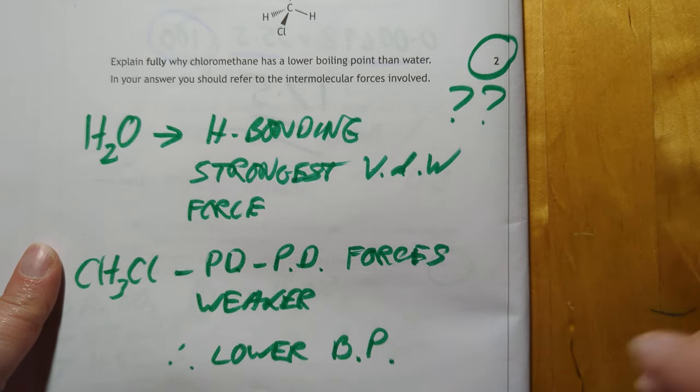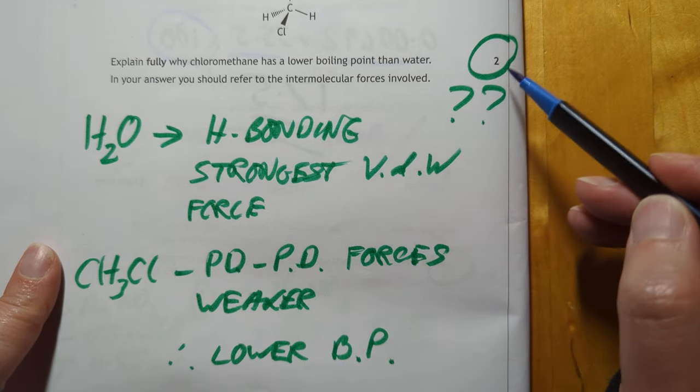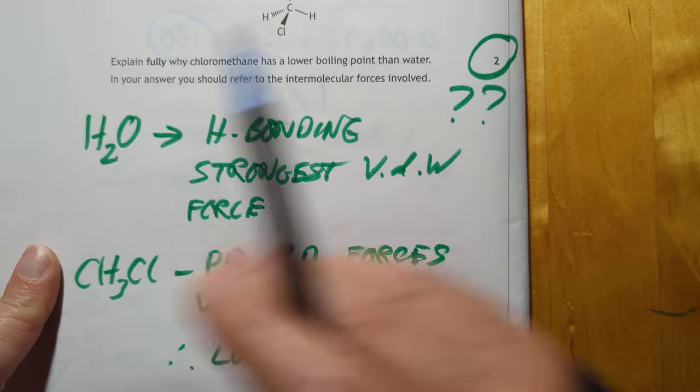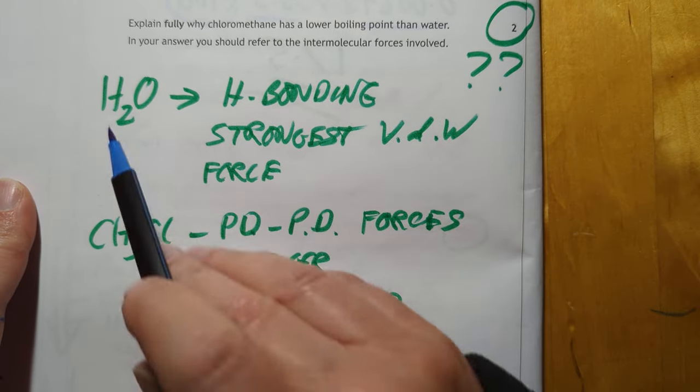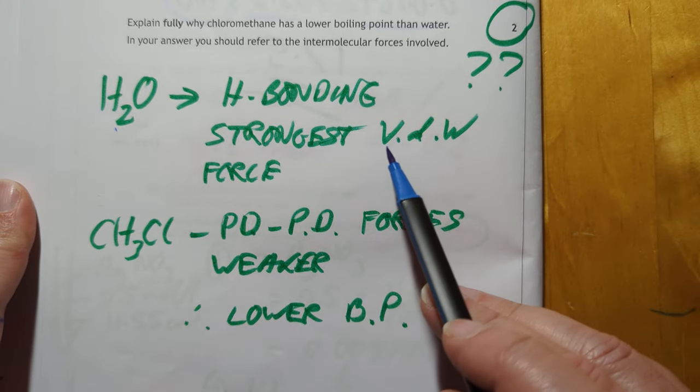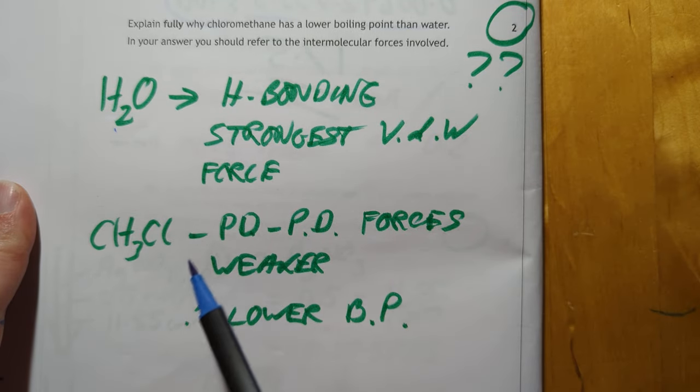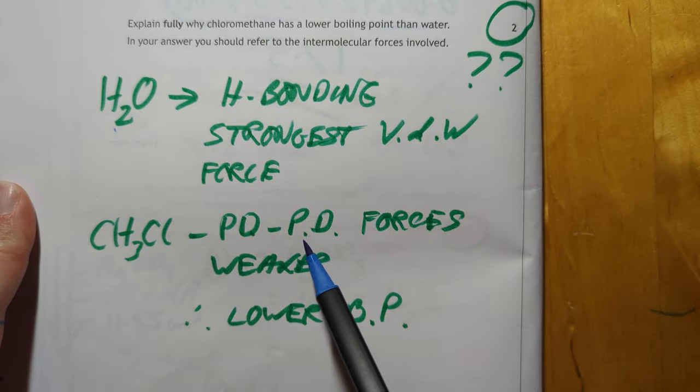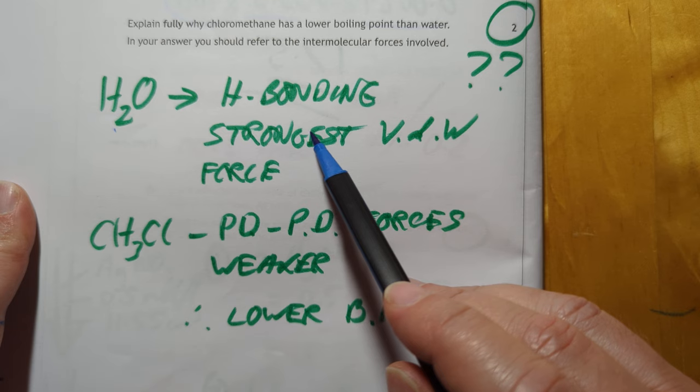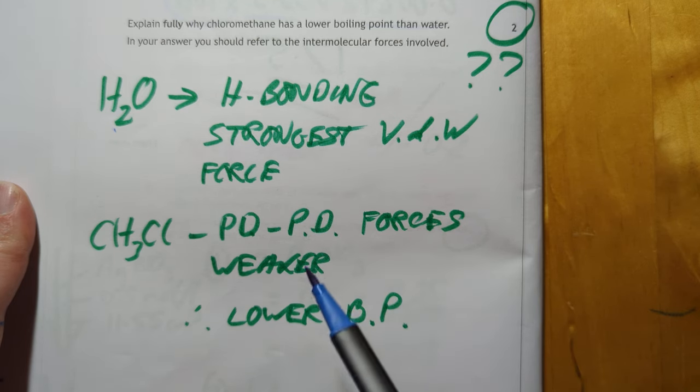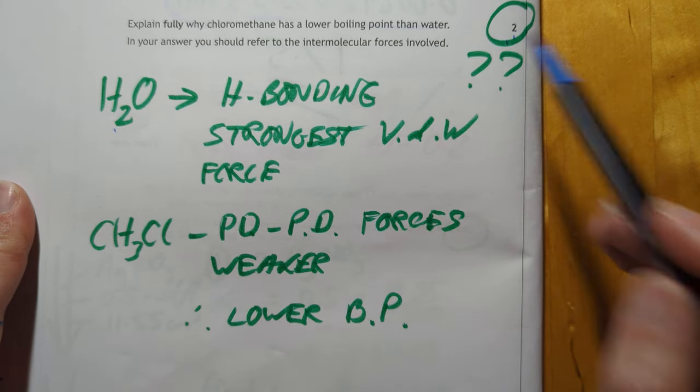Oh yeah another one. Press my button time. I have no idea how those marks are going to be allocated. Water contains hydrogen bonding which is the strongest van der Waals force. Chloromethane will have a permanent dipole permanent dipole certainly but that's not as strong as hydrogen bonding so therefore you'll have a lower boiling point. I have no clue how they're going to set that up.